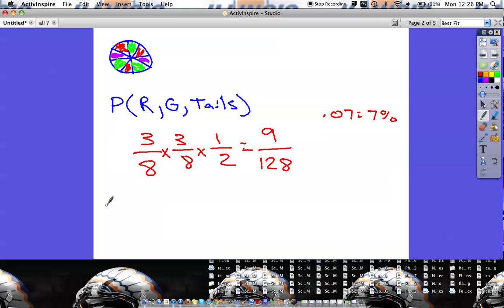Now let's try a different one here. Let's say what is the probability of, and let's throw some dice in here. Let's say the probability of getting an even number on the dice, and then getting purple on the wheel, and then getting tails on a coin, and then we go back to the wheel and we want to get a red.